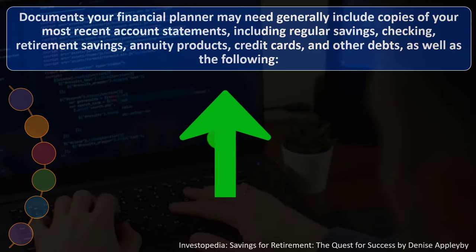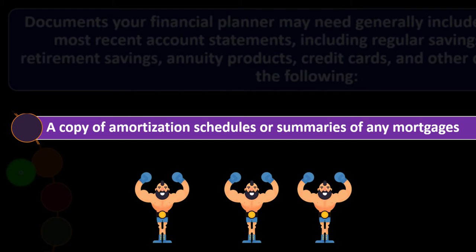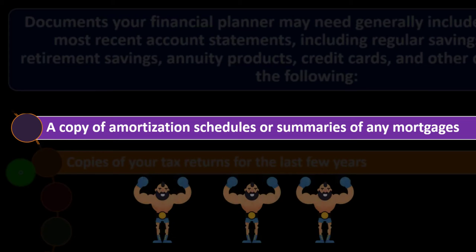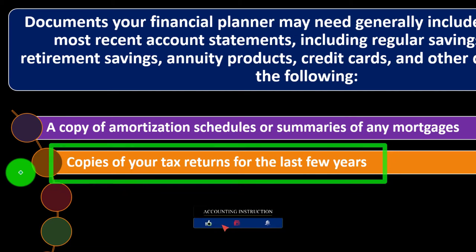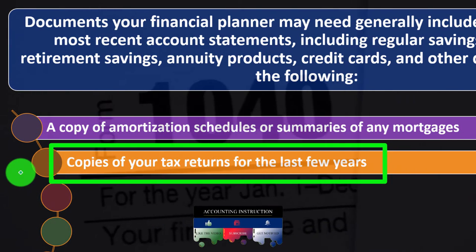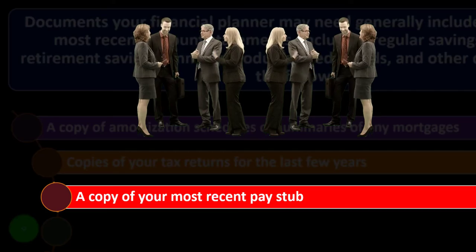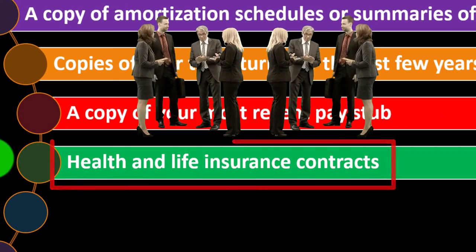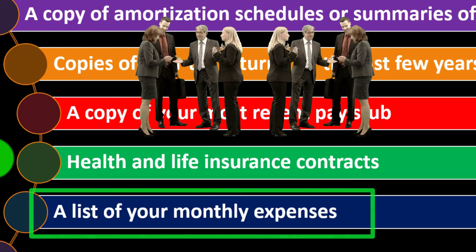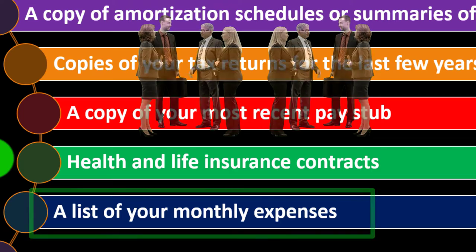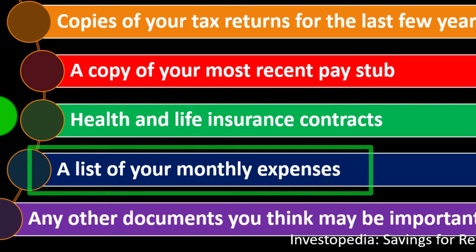Other documents needed include a copy of amortization schedules or summaries of any mortgages — the amortization schedule helps determine how long the mortgage is outstanding and the yearly costs. Copies of your tax returns for the last few years can give a general idea of income reported on a tax basis. A copy of your most recent pay stub shows current earnings. Health and life insurance contracts, and a list of monthly expenses, give an idea of your current lifestyle and how it might change going into retirement.